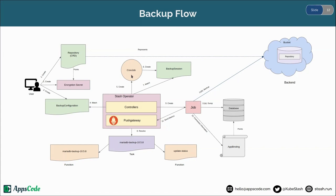This cron job periodically triggers a backup session. When it creates a backup session, the Stash operator watches for it and resolves the add-on — in our case MariaDB backup. According to that add-on, Stash operator creates a backup job. This job gets the connection information from the AppBinding to access the database. Using that connection information, the job dumps the data and sends it to cloud storage. When all of these are done, the backup job sends metrics to the Stash operator.